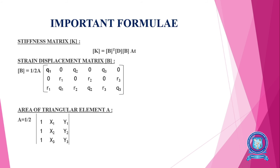Now we are going to see some important formulas for this third unit. First is the stiffness matrix, the K matrix. K = [B]^T [D] [B] × Area × t, where t is the thickness.